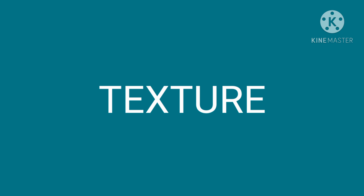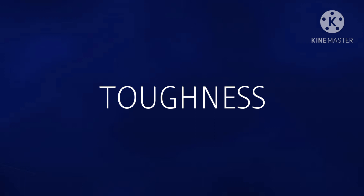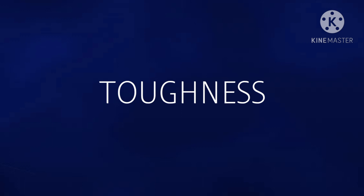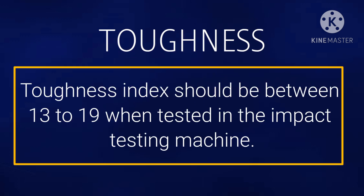Texture. There are different types of texture in rocks, and uniform texture of rock is best for construction. Toughness. A good building stone should be tough enough to withstand stresses developed due to vibrations or dynamic loads of machinery and moving loads. The toughness index should be between 13 and 19 when tested in the impact testing machine.